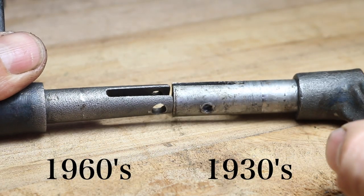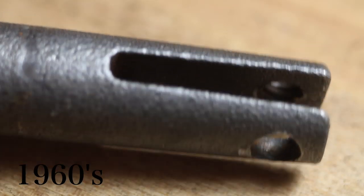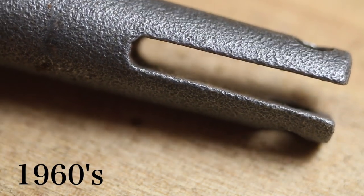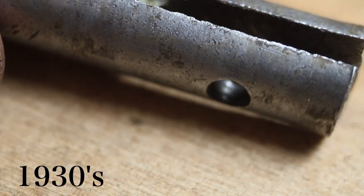Interestingly, the lever shaft of the 1960s version looks like it is cast iron, whereas in all the other models, the lever shaft is cut from steel rod.